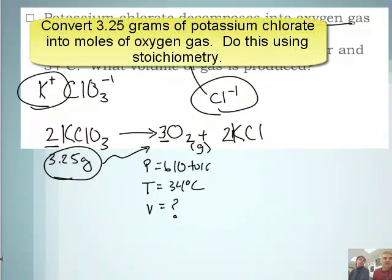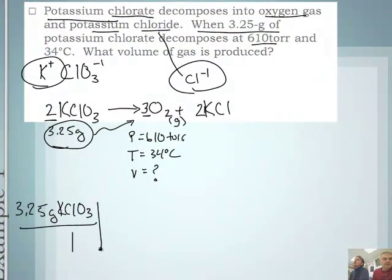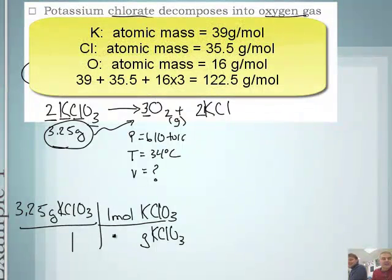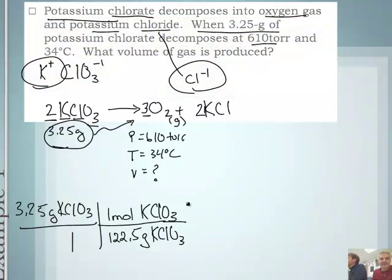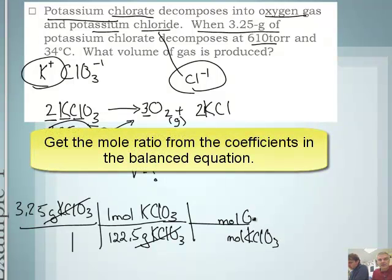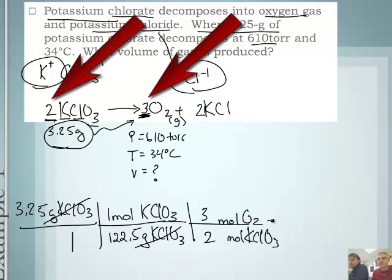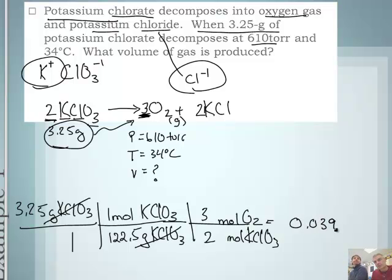I'm going to take this 3.25 grams and convert to moles of oxygen gas. So I'll say 3.25 grams of KClO3 over 1. The molar mass of potassium chlorate: 122.5 grams of KClO3. If you add K plus Cl plus 3 O's, it adds up to 122.5. And then the grams of KClO3 cancels. Now I need to put the moles of KClO3 to the moles of oxygen gas. There are 3 moles of O2 from the balanced equation and 2 moles KClO3 from the balanced equation here. That gives me the moles: 0.0398 moles. Now put that in - that's n.